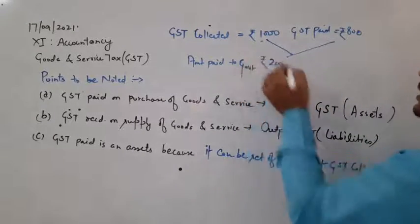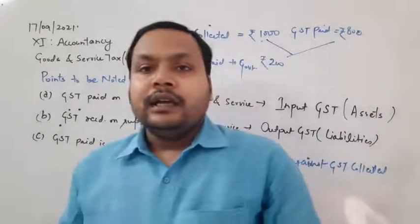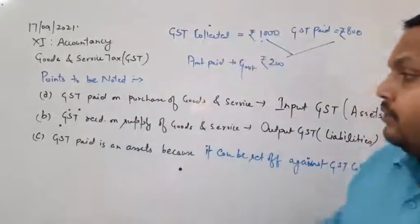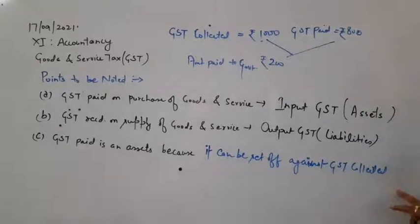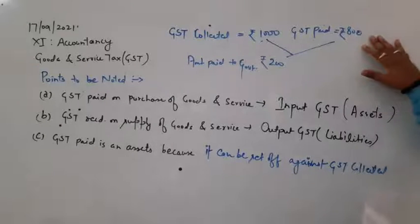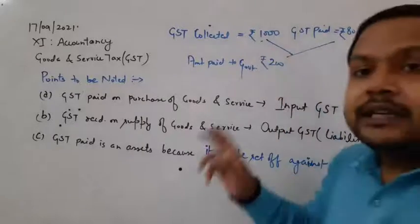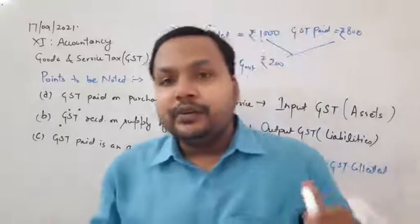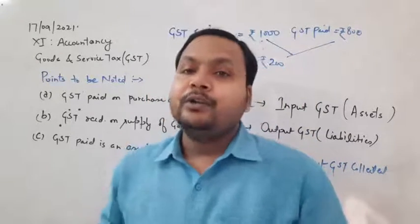GST paid is an asset because it can be set off against GST collected. For example, if GST paid is 800 rupees and GST collected is 1000 rupees, you will not give the total 1000 rupees to the government — only 200 rupees. Because you already paid GST of 800 rupees on that product, so you get credit for it.